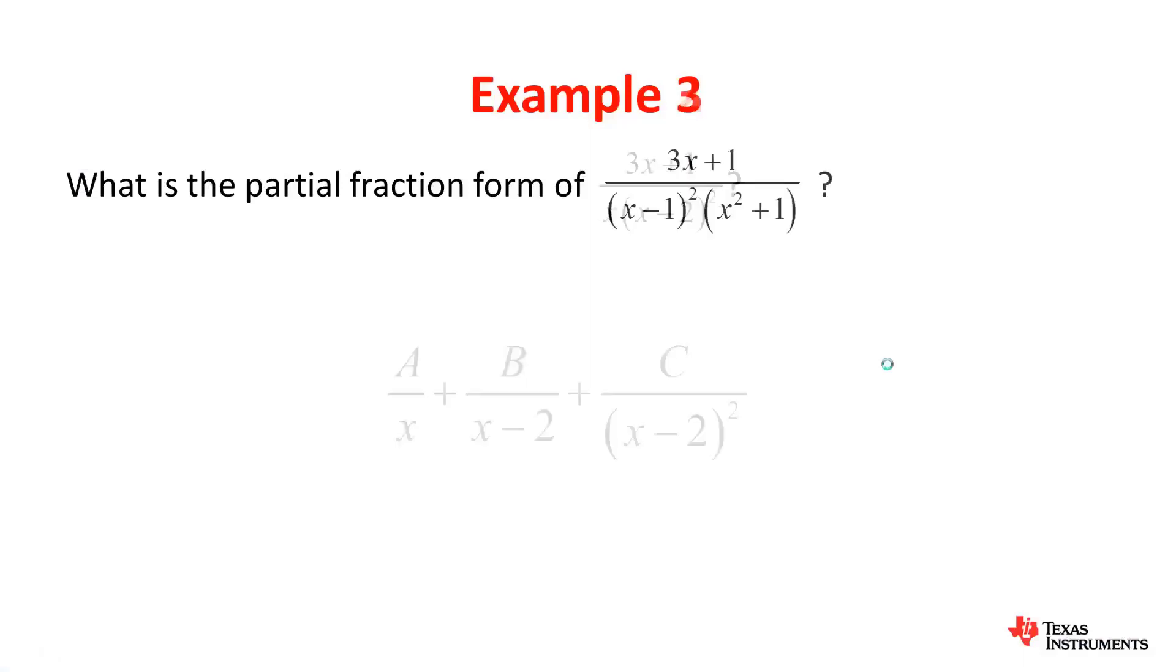Finally, moving on to our final example, we want the partial fraction form of 3x plus 1 over x minus 1 squared times x squared plus 1. Again, we can't really factorize the numerator any further than it currently is, however we can use expand on our CAS to get the final answer.